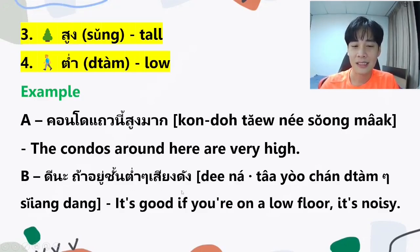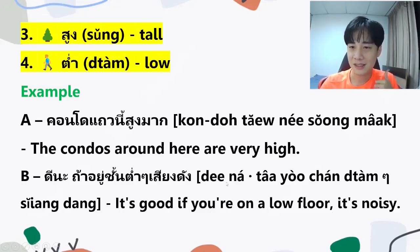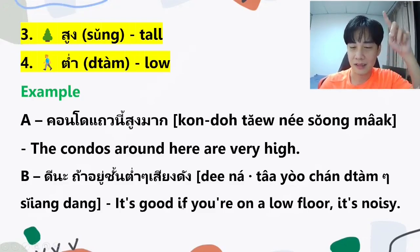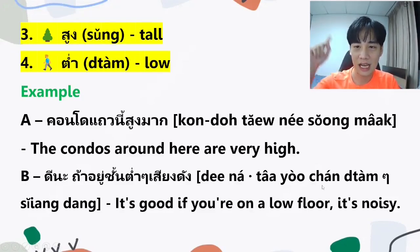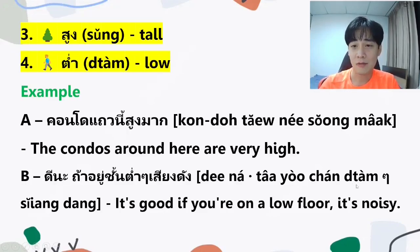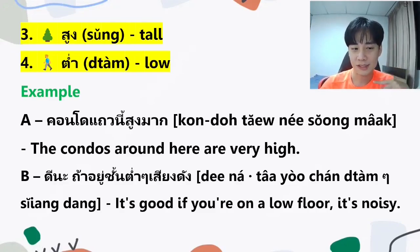ดีนะ ถ้าอยู่ชั้นต่ำ เสียงดัง — it's good if you are on a low floor, it's noisy. ดีนะ is 'it's good,' ถ้า is 'if,' อยู่ is 'to be at,' ชั้น is 'a floor' (high tone), ต่ำ is 'low,' and you can repeat ต่ำต่ำ for the same meaning. เสียง means 'sound' (rising tone) and ดัง means 'loud' (flat tone), so เสียงดัง is 'noisy.'